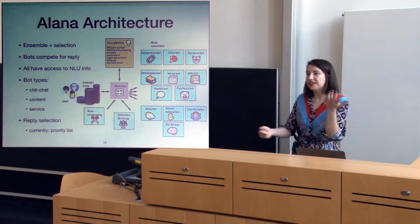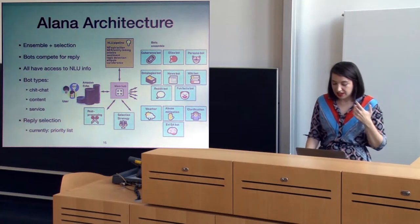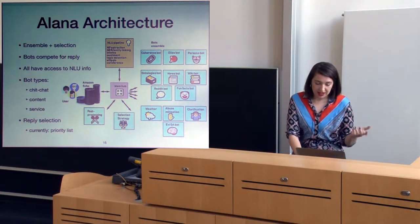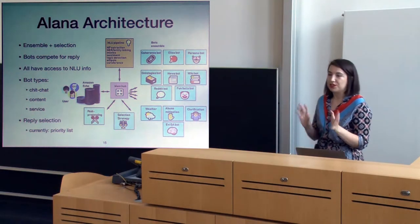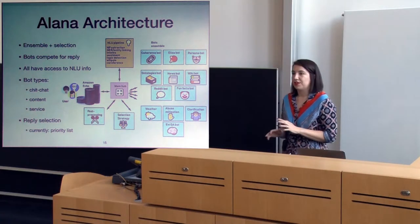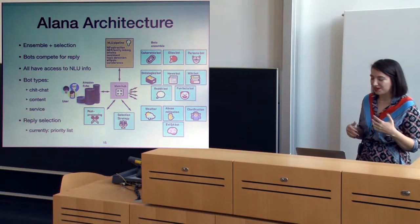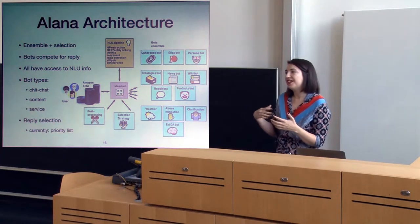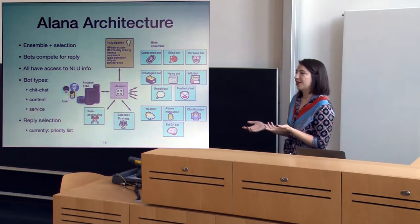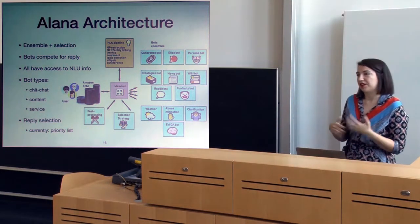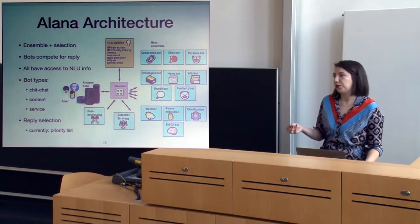We had a news bot that looked up news articles about relevant entities — a person, a city, anything. A wiki bot looking at Wikipedia. Another bot drawing from Reddit, though we carefully curated which subreddits we used, because Reddit is a ticking bomb — during the challenge, if the bot said something inappropriate, it was taken offline for hours as a penalty. We had incidents. We also had a fun fact bot, since many customers — likely children — wanted fun facts or jokes.